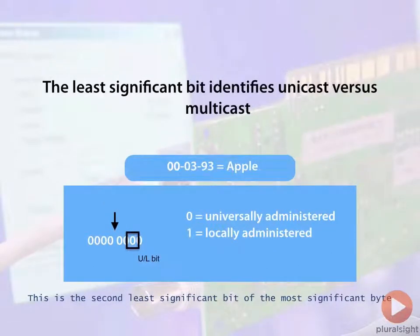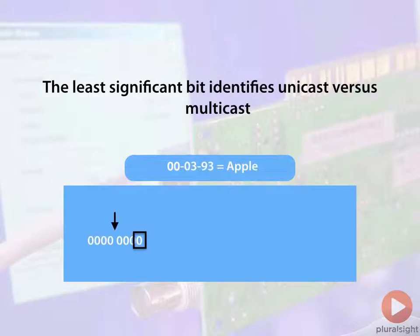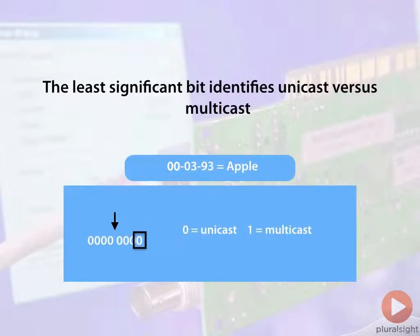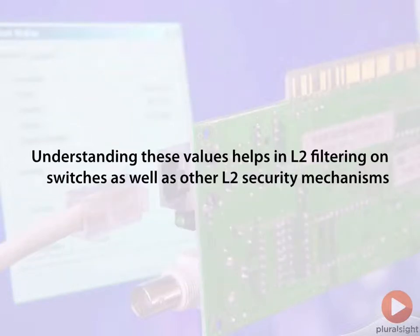The least significant bit identifies whether the traffic is unicast — meaning a one-to-one conversation — or multicast, meaning one-to-many. If that least significant bit is set to 0, this indicates unicast; if it is set to 1, this indicates multicast. Understanding these values helps you in Layer 2 filtering on switches, as well as in controlling different security mechanisms found at Layer 2.